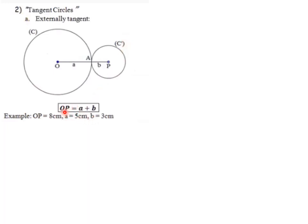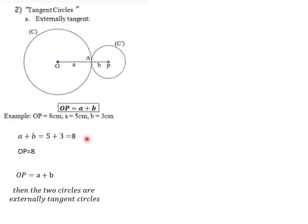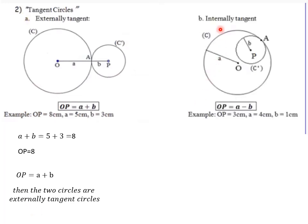The variable names depend on the figure — the distance between the two centers might be called OO′ or SR. In this example, OP is 8, A is 5, and B is 3. Since A plus B equals 8, which equals OP, we conclude that these two circles are externally tangent.